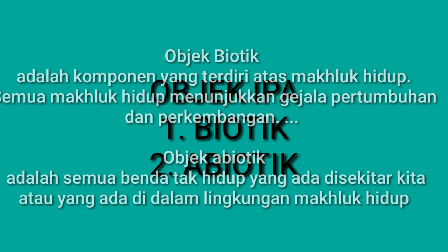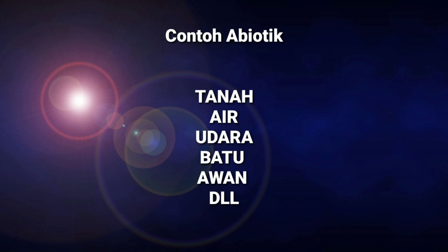Kalian sudah tahu apa itu abiotik dan biotik? Objek biotik adalah komponen yang terdiri atas makhluk hidup. Semua makhluk hidup menunjukkan gejala pertumbuhan dan perkembangan, maka disebut dengan objek biotik. Sedangkan objek abiotik adalah semua benda tak hidup yang ada di sekitar kita, atau yang ada di dalam lingkungan makhluk hidup. Contoh dari abiotik yaitu tanah, air, udara, batu, awan, dan lain-lain.